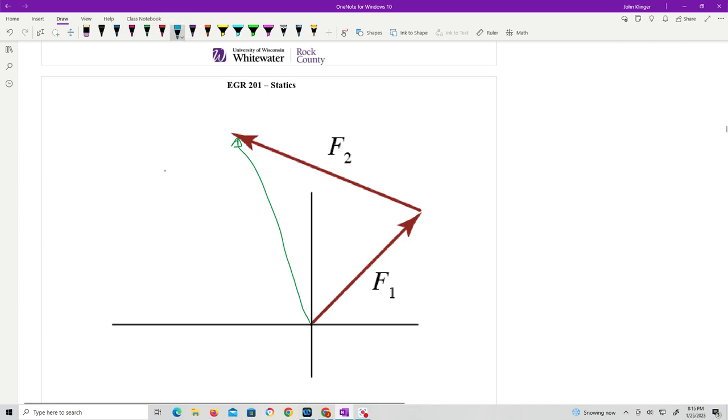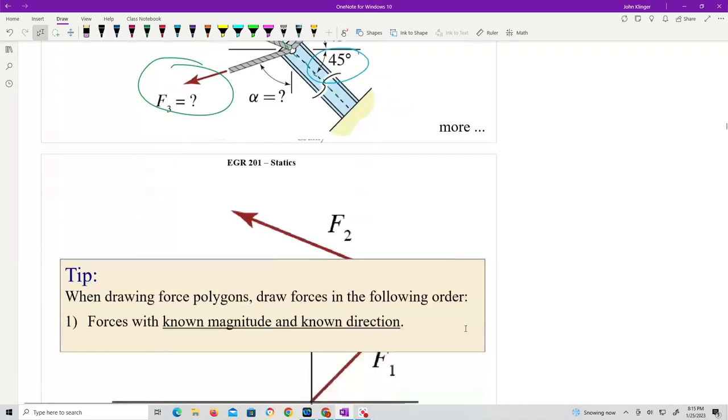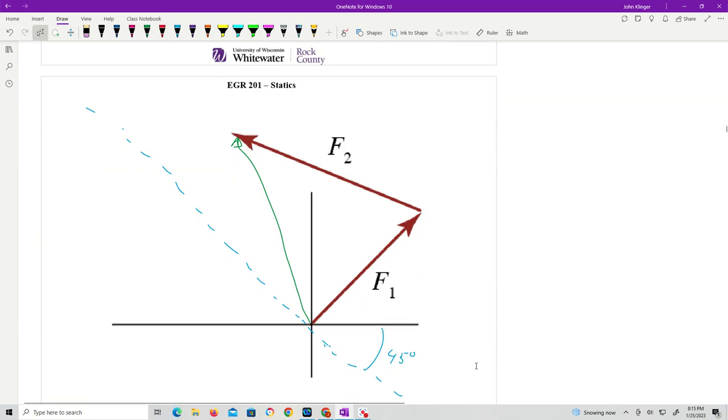I know that this vector, the resultant vector, is going to be at some 45 degree line. That's its line of action. The reason it's 45 is because it shows that here. So now we need to find F3.